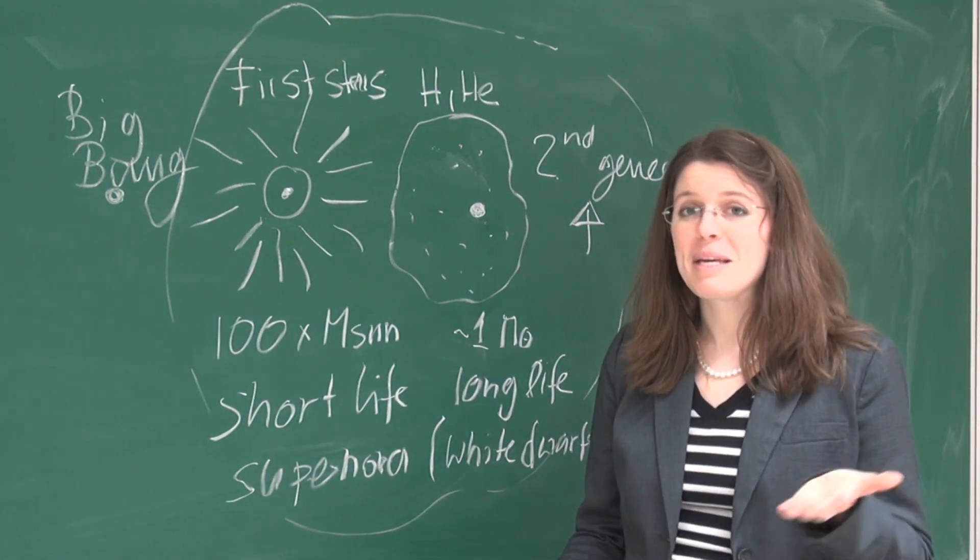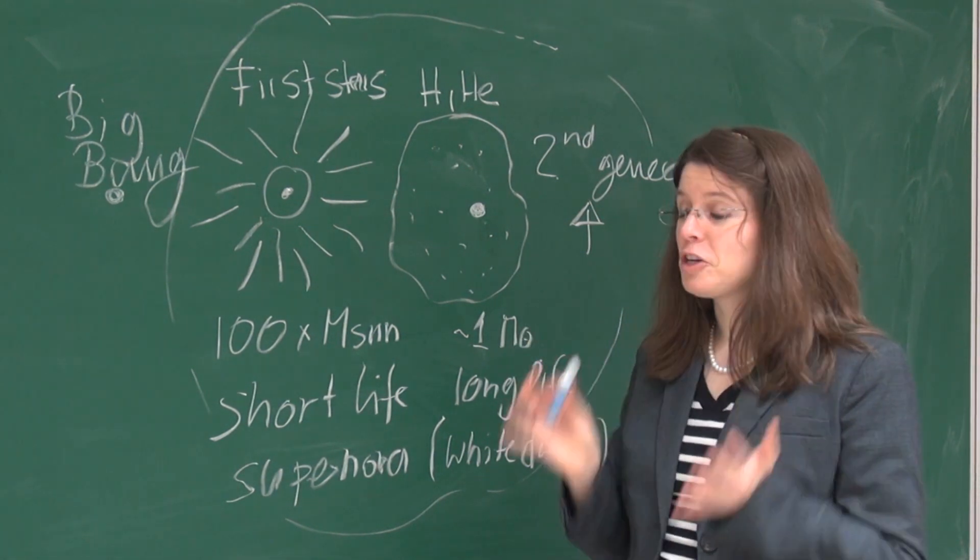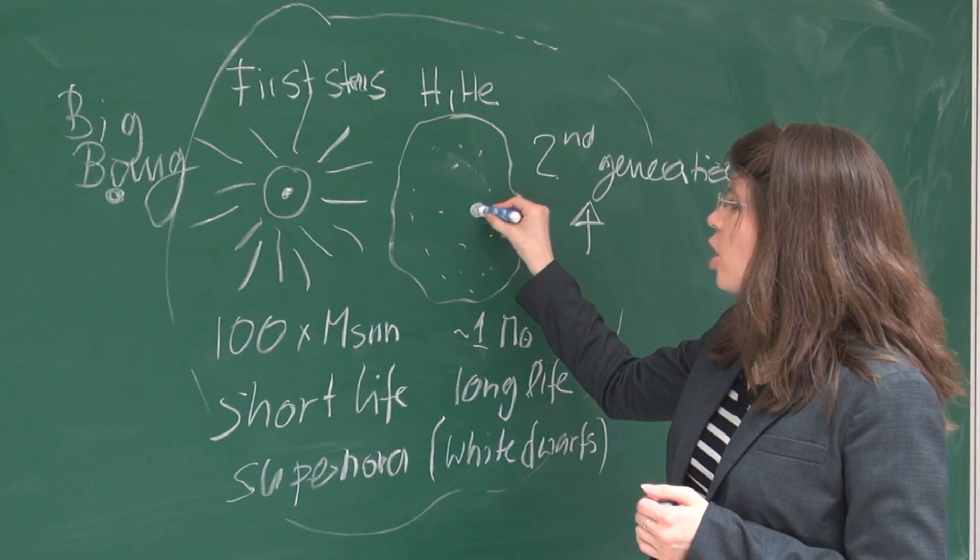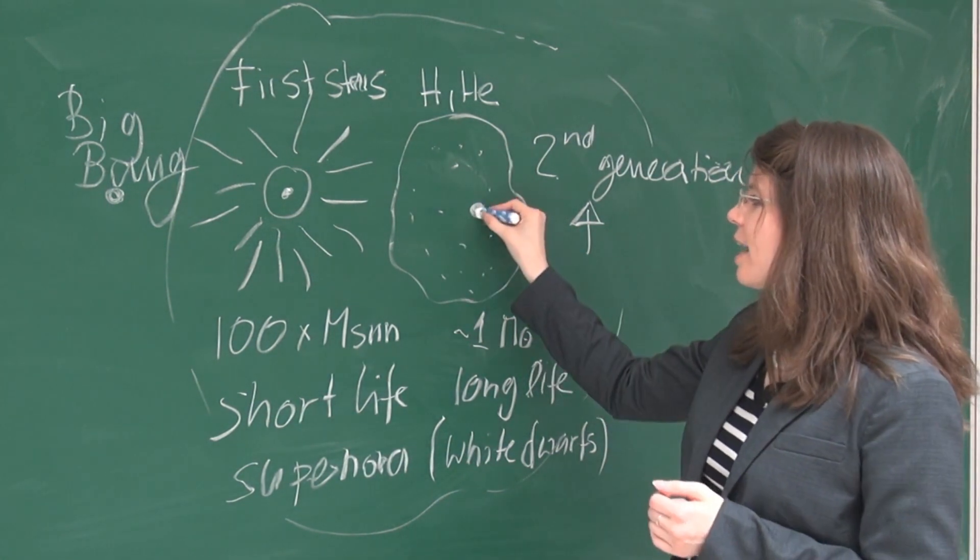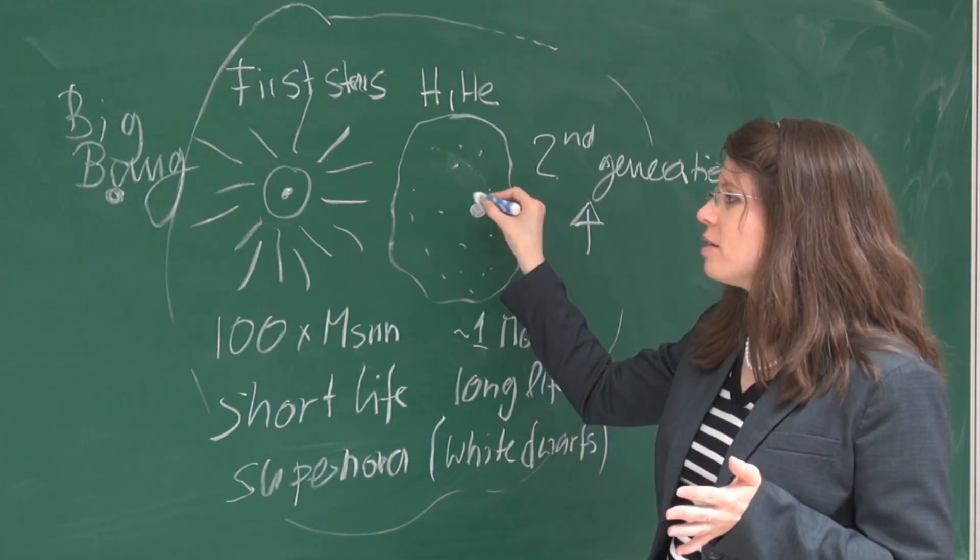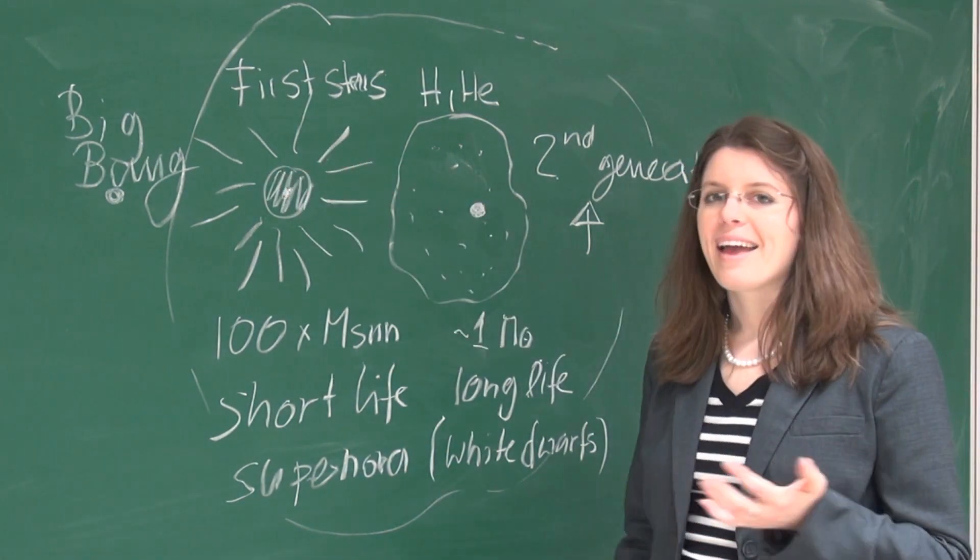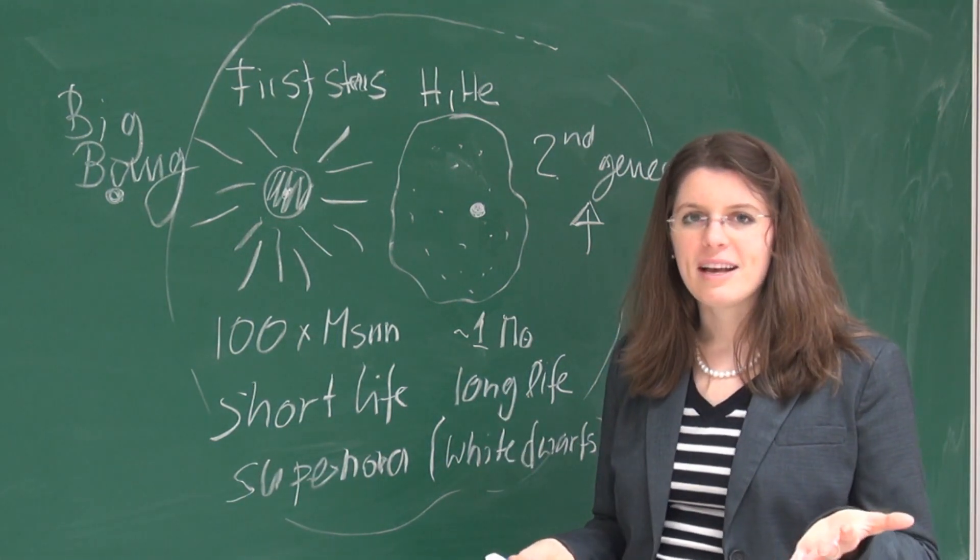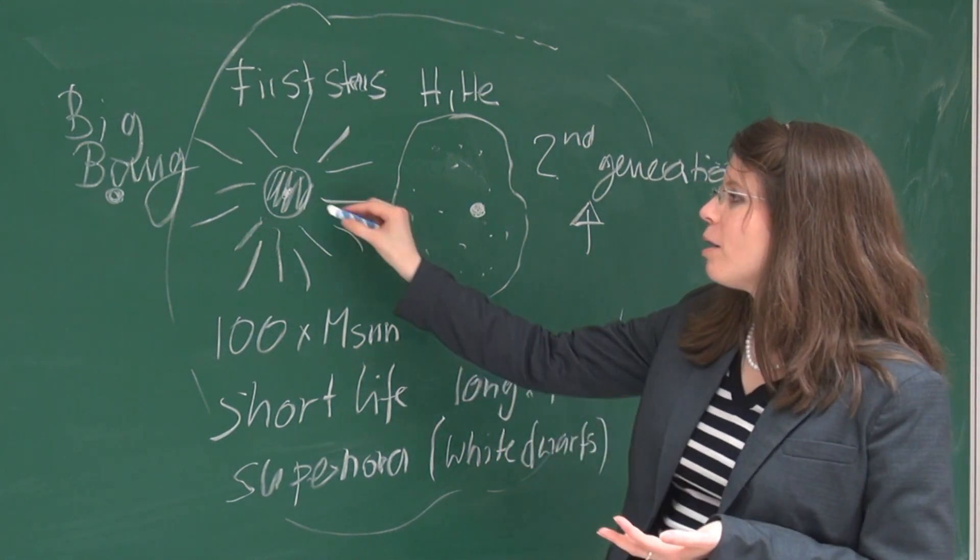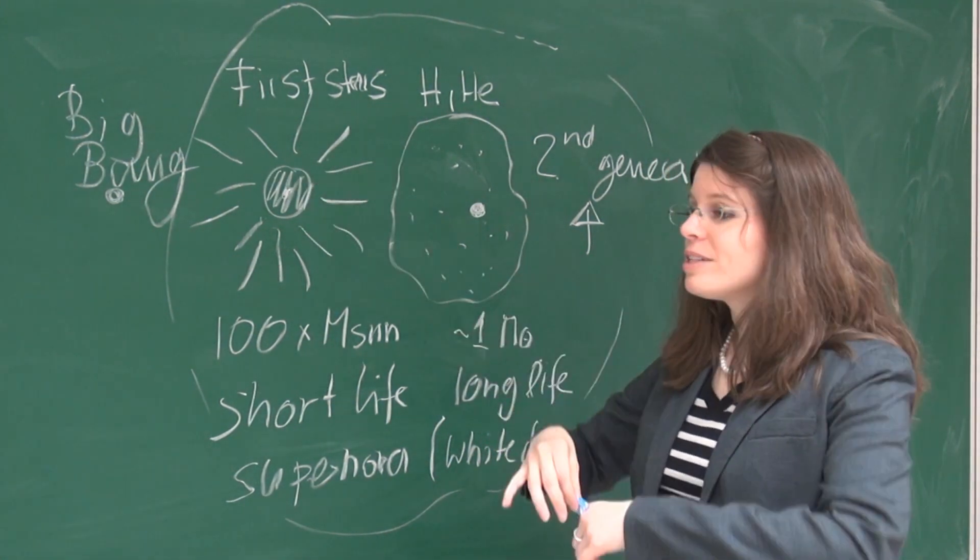But now we have made a new discovery which is very, very exciting because it is very clear for the first time that this object formed in a gas cloud that was enriched by only one supernova. So only one of those massive stars here. And that is absolutely fantastic because it tells us all the details we need to know about the element production in this star and how it exploded.